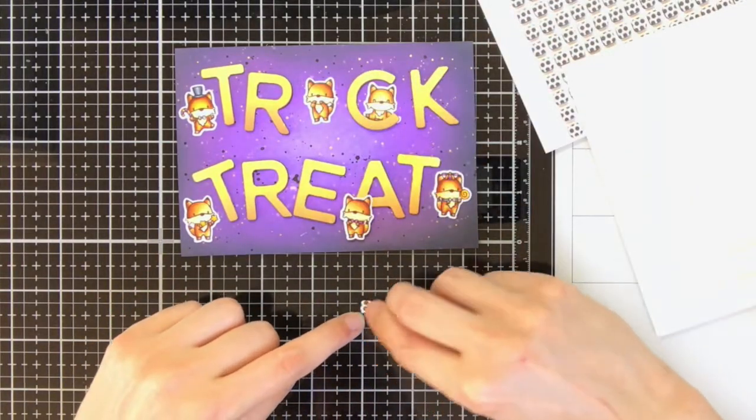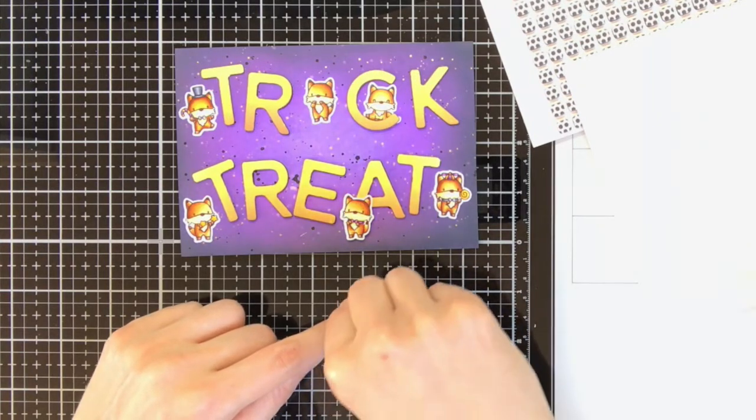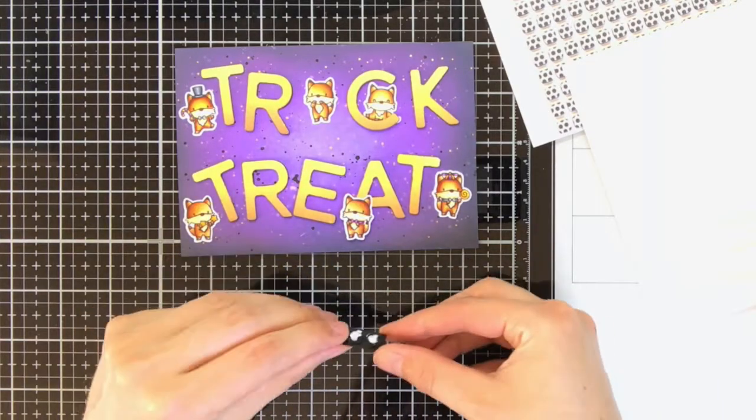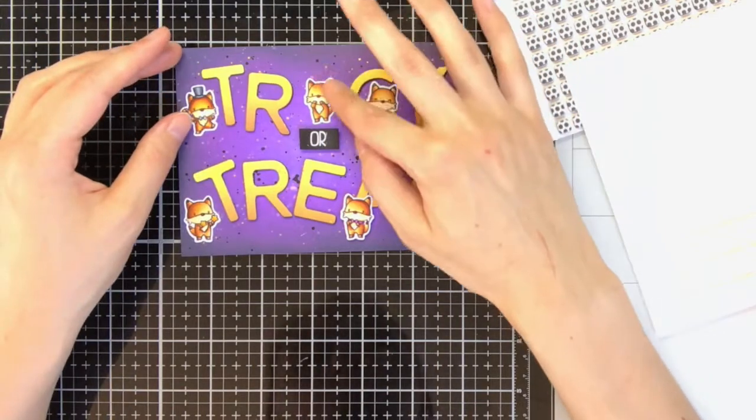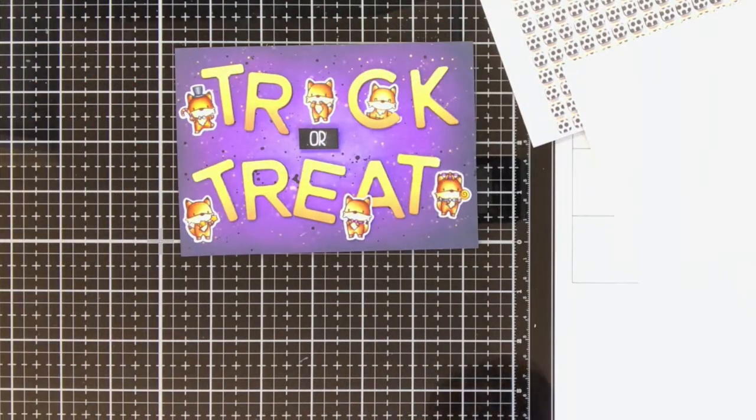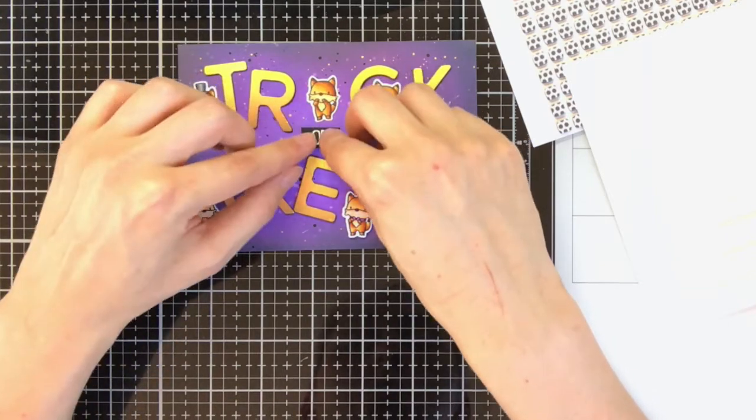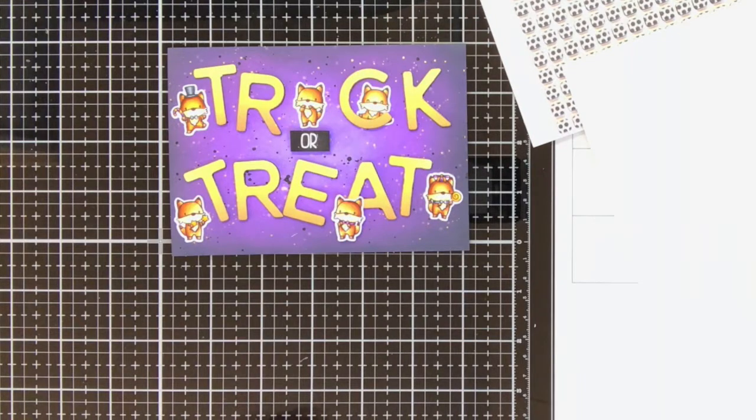All the letters I adhered with liquid glue. For the foxes and also for the or sentiment, I am going to use these foam squares from scrapbook adhesives. Because I stamped the or on black cardstock, I am also using the black foam squares, so you will not notice them that well. But for adhering all the little foxes, I am using the white foam squares.